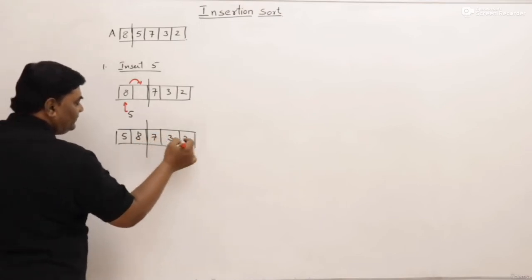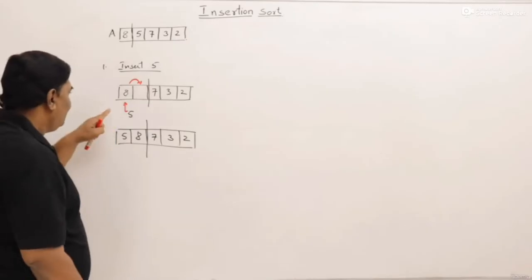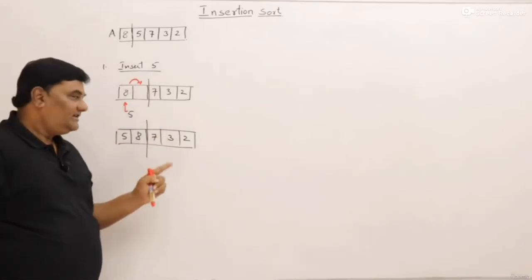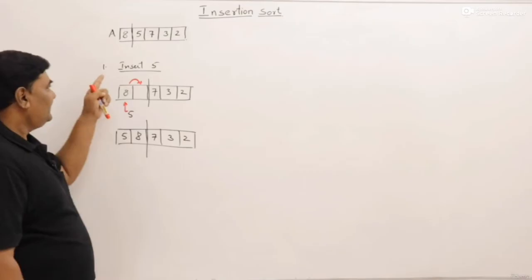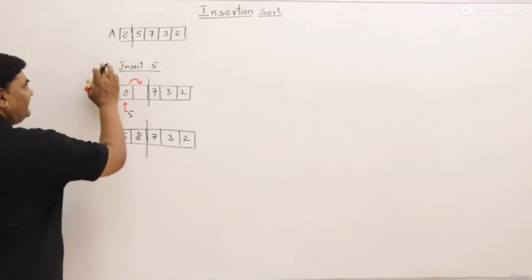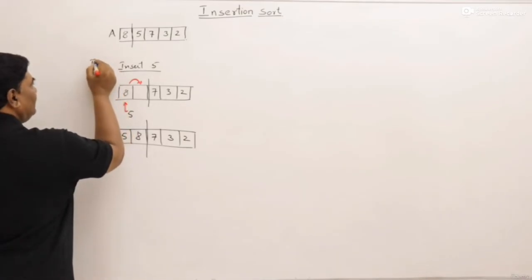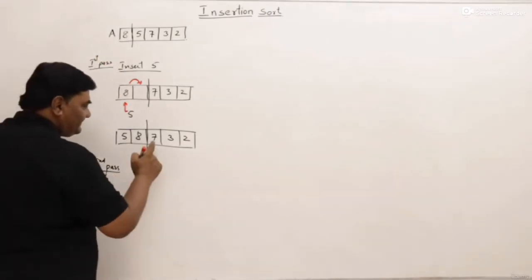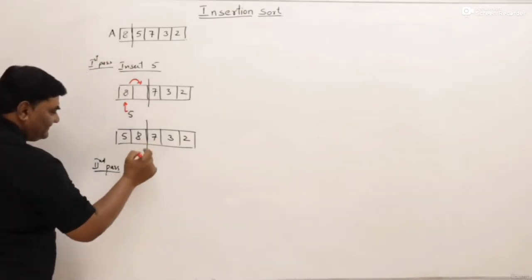The remaining elements seven, three, two are not yet sorted. I have shown how to insert five, how to shift the element, and the result. One element has been inserted — let us call this the first pass. In the second pass, let us insert seven.